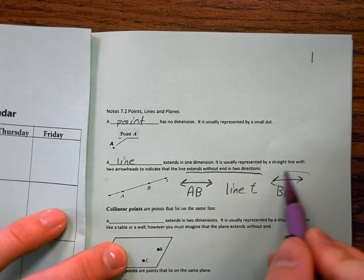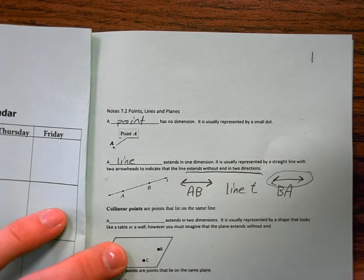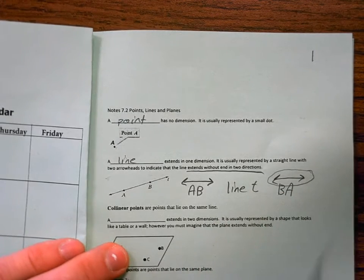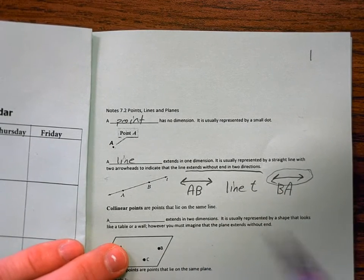This is critical, though. I want you to circle it. You must draw the arrow over the top. You must have an arrow on both sides. You'll see why in a little bit.